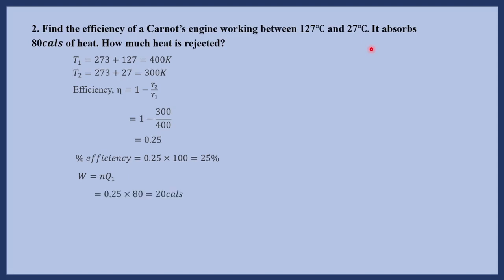Now we find the heat rejected. We know that W equals Q1 minus Q2, so Q2 equals Q1 minus W. The heat rejected Q2 equals 80 minus 20, which is 60 calories. So the heat taken from the source is 80 calories. First we found the efficiency, from that we found the work done, and from the work done we found the heat rejected to the sink.